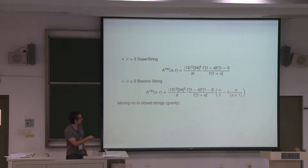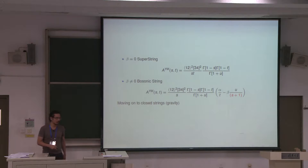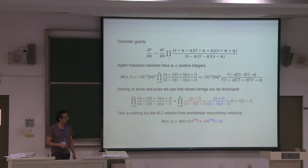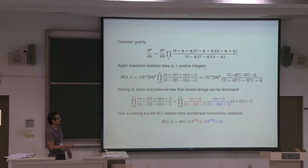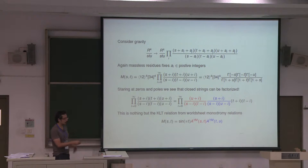Now for the closed string, which means gravity. I can do exactly the same thing — put everything on the denominator and apply the same argument about canceling double poles with explicit zeros in the numerator. Then constraining the massless residue, for the superstring, forces all the A coefficients denoting the spectrum to be integers. I immediately get the closed string superstring amplitude.